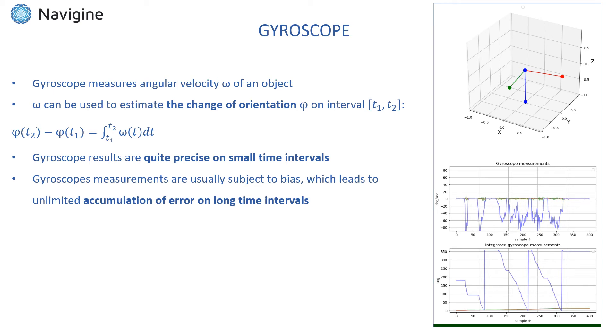The video on the left demonstrates both these features on the example of an experiment where device is rotated around one of its axis, the blue line. As one can see this rotation is estimated quite precisely. But at the same time one can see that there is a growing error in estimation of angles of rotation around other two axes which should be zero in practice. Such behavior results exactly from bias in gyroscope readings.